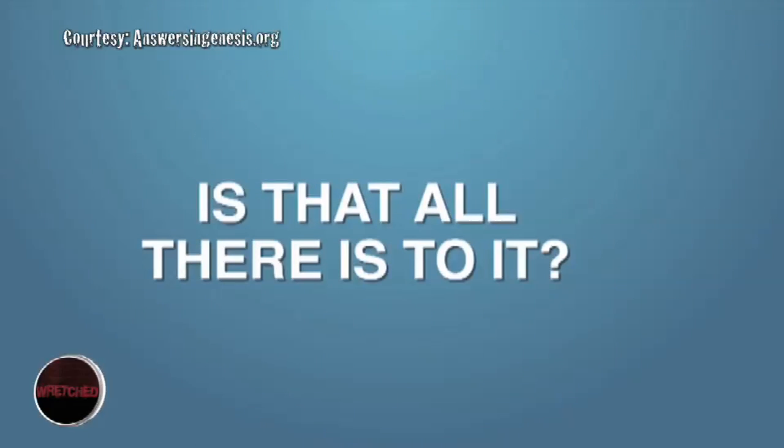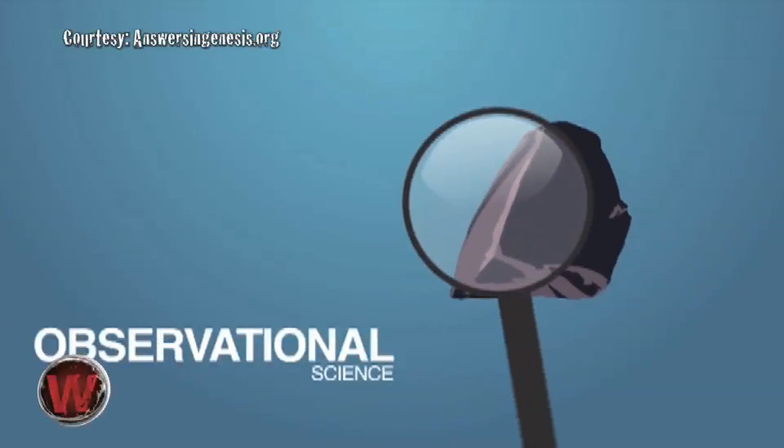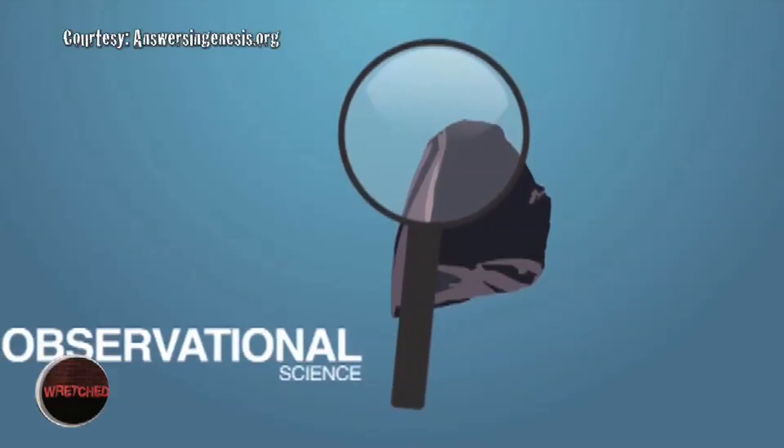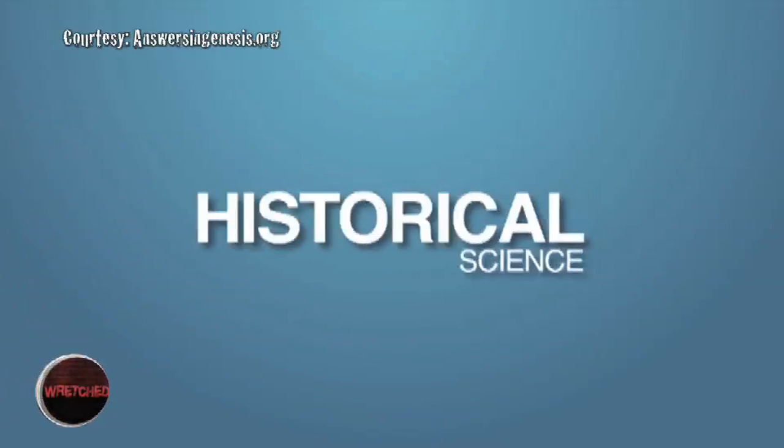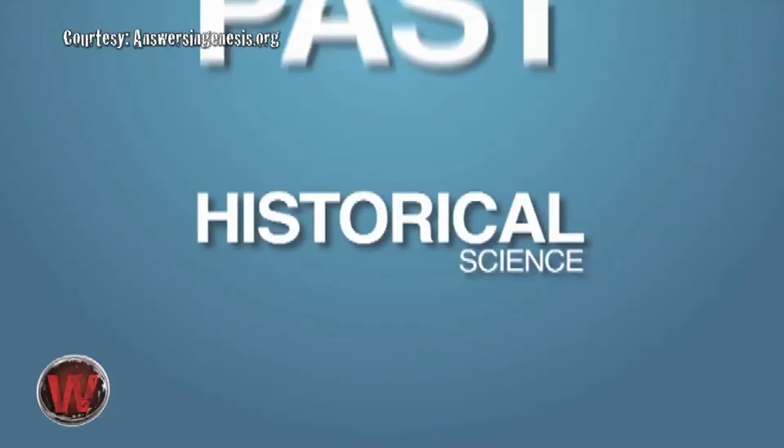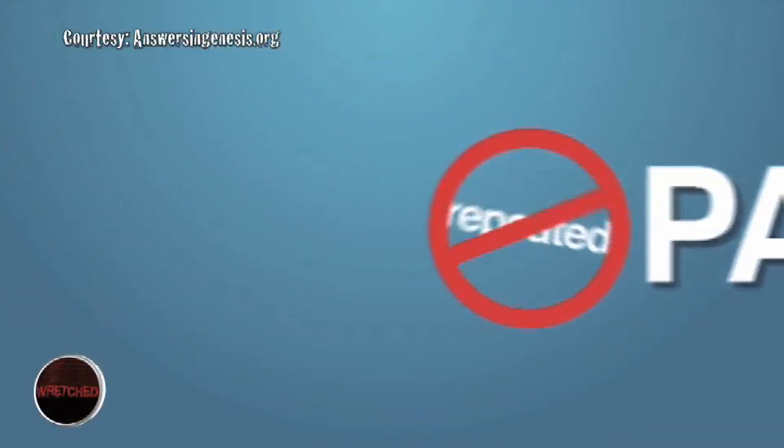But is that all there is to it? Here's where it gets tricky. It's true, we can measure a decay rate using observational science, but there's another kind of science that is required to accurately calculate dates for rocks, and that is what we call historical science. Historical science deals with things in the past, and therefore it cannot be repeated and tested.